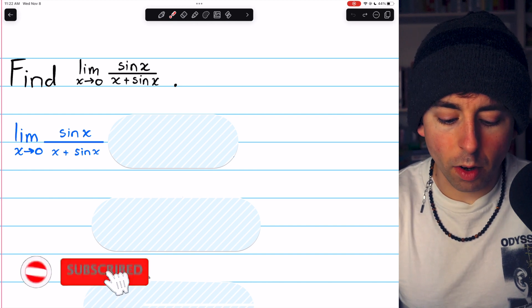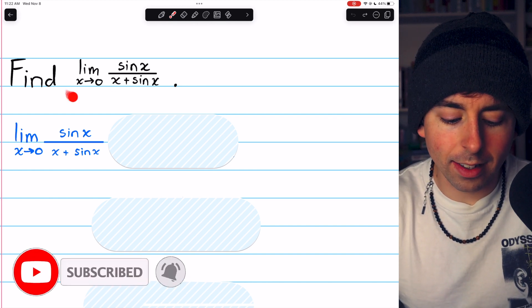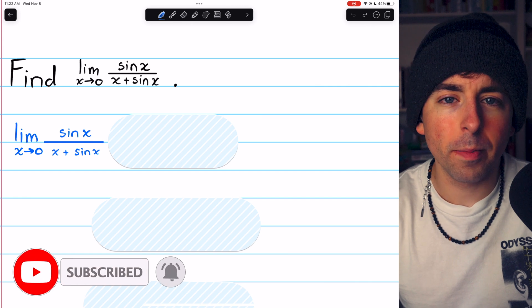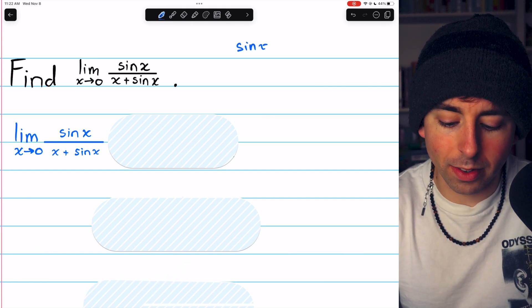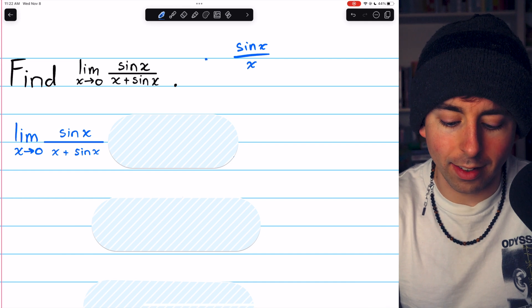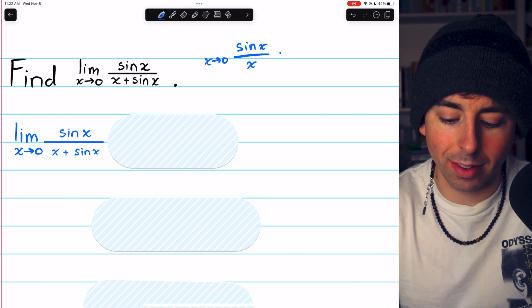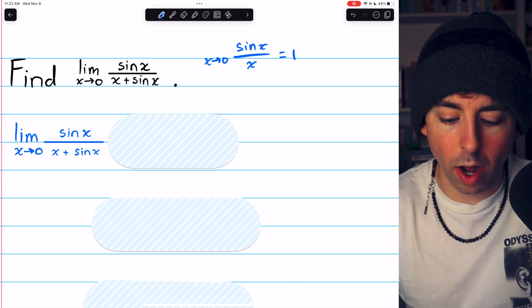Let's find the limit of sine x over x plus sine x as x approaches zero. When we see this limit, we might immediately start to think about sine x over x as x approaches zero, a famous limit that we know is equal to one.